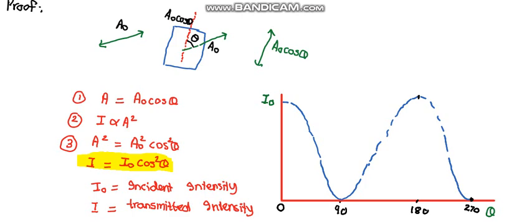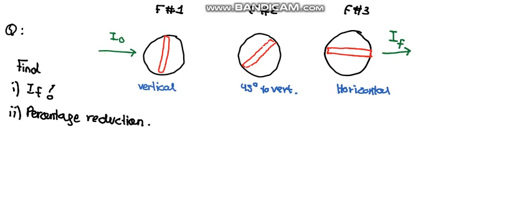Now let's see a question for this topic. We have three filters. One filter is vertical, the second one is 45 degrees to the vertical, and the third filter is horizontal. We have light of intensity I naught. The question is to find the light after it passes through the third filter IF. We need to find the final intensity after passing through filter number three, and part two says to find the percentage reduction.